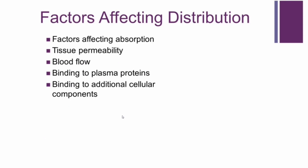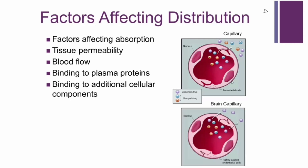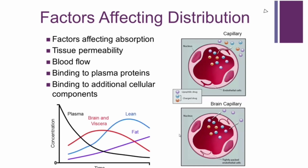There are several factors affecting distribution: tissue permeability, blood flow, binding to plasma proteins, and binding to additional cellular compartments — all of which determine where and how fast the drug distributes throughout the body. Distribution is also related to capillary permeability, and a specific site of concern is the brain with the blood-brain barrier. Concentration-time curves based on distribution differ across tissues — the exposure in the plasma is represented differently from how a drug distributes to fat, lean muscle, or the brain, which is highly variable and drug dependent.